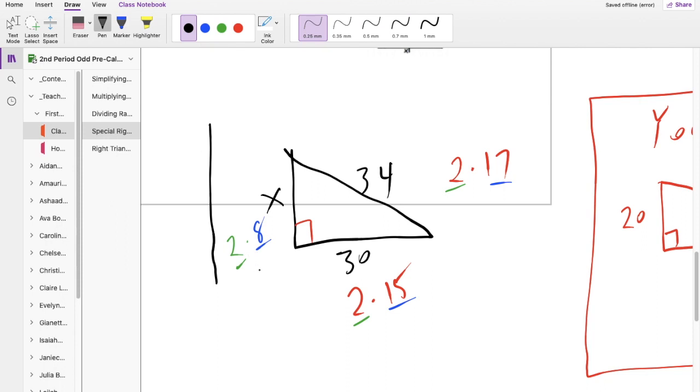So that means that this other side is just 16. So this is 16-30-34.